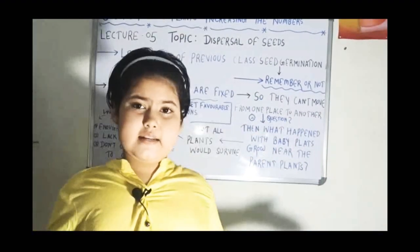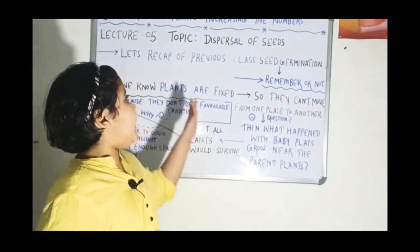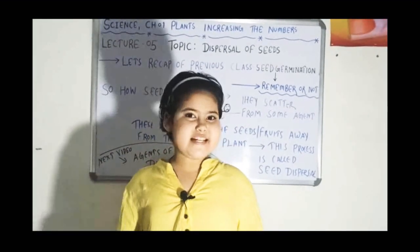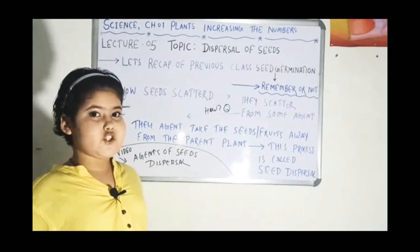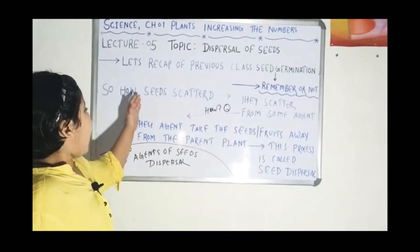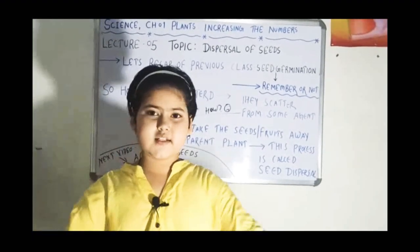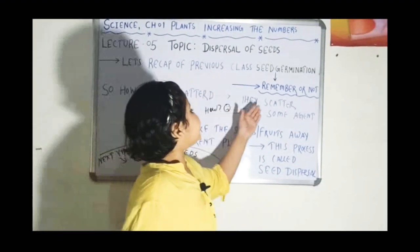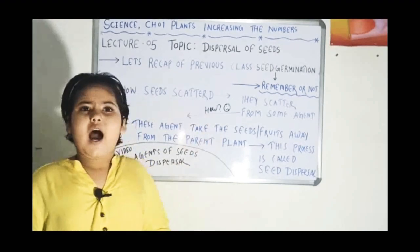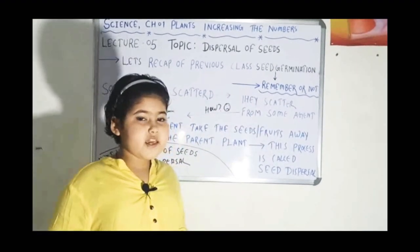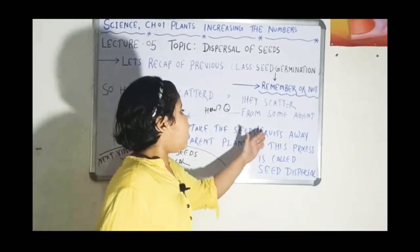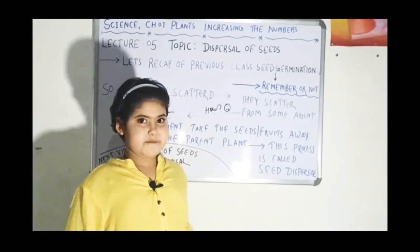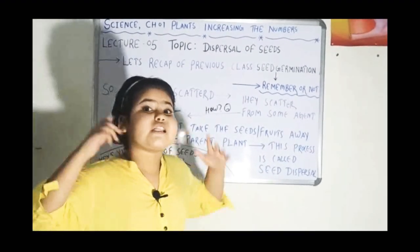So how do all these seeds scatter here and there? Seeds scatter through some agents. These agents take the seed or fruit away from the parent plant, and this process is called seed dispersal. In my next video, I will tell you about these agents.